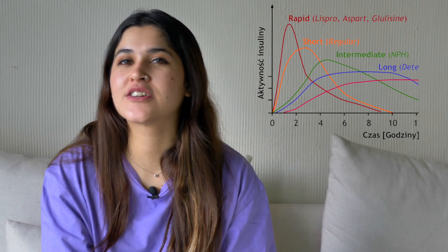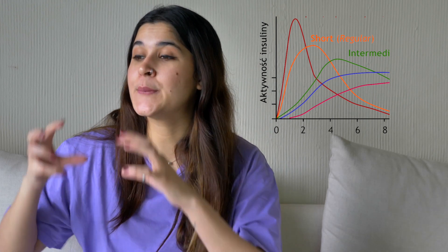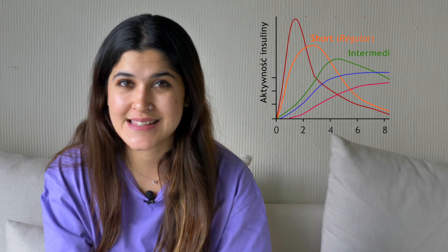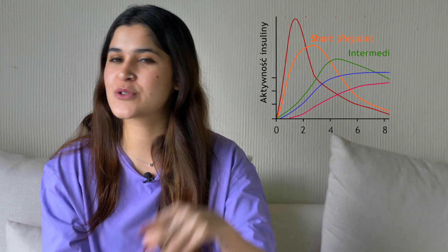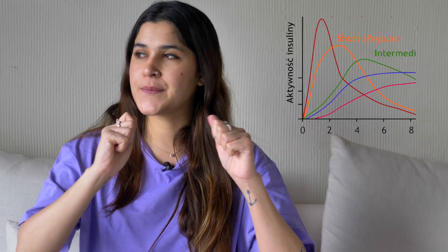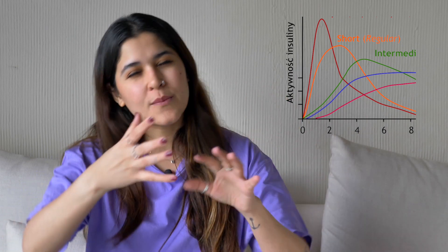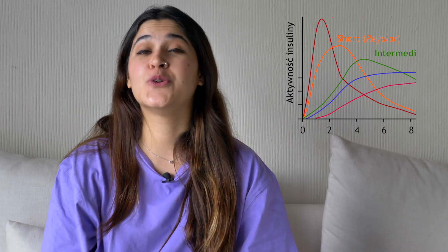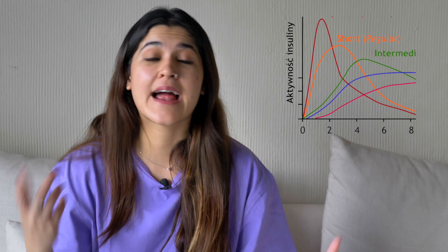Next we have short acting or regular acting insulin. This insulin is closest to the human molecular form, so there are not too many changes in the molecular structure, which gives it an absorption time of about 30 minutes. We also call it human insulin or regular insulin. The brand name would be something like Actrapid. We don't prefer it much for flexibility because it has a 30-minute onset. So if you have a very regular timetable, you eat fixed meals and do almost the same things every day, then it's a great option. But if your schedule is all over the place and you want to eat at random times, then rapid acting might be better for you.